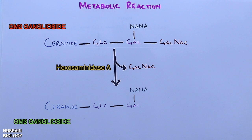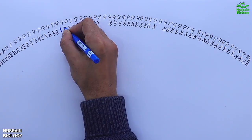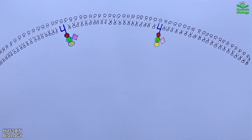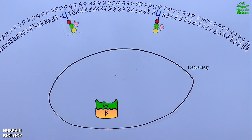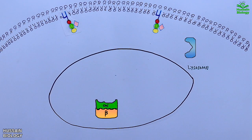Now let's see how this is done at a molecular level within the cell. Here we have the cell membrane which has GM2 gangliosides embedded on the intracellular side, as shown in the diagram. Within the cell we have the lysosome, which contains hexosaminidase enzyme in the form of a heterodimer — that's the alpha subunit and beta subunit, referred to as HexA and HexB. The first step is to extract the GM2 ganglioside from the cell membrane, and this is done by GM2 activator protein.